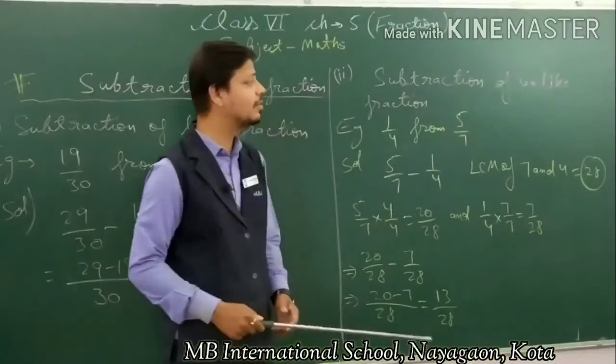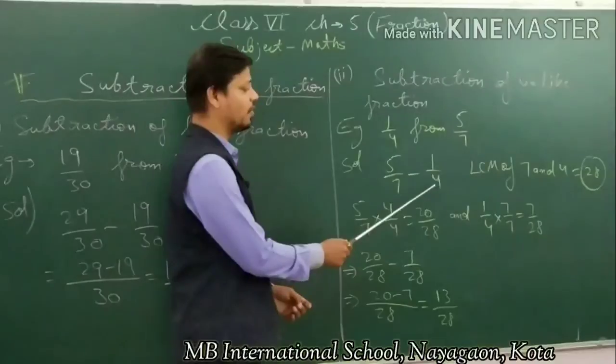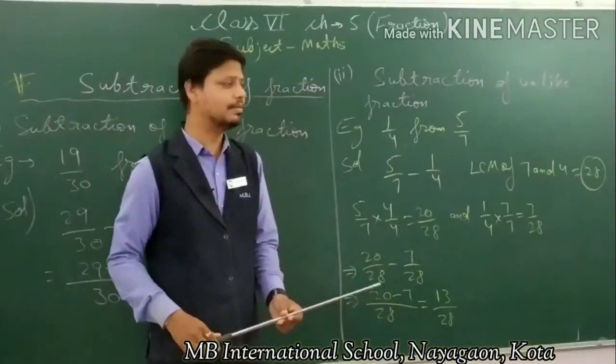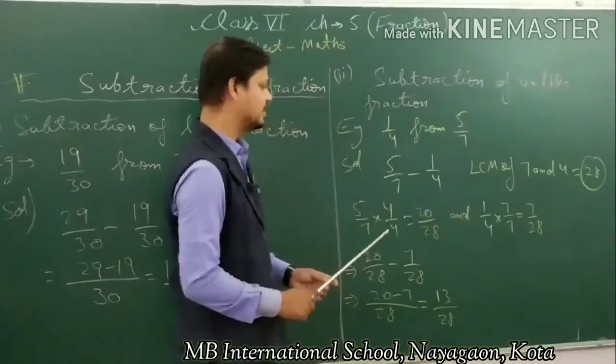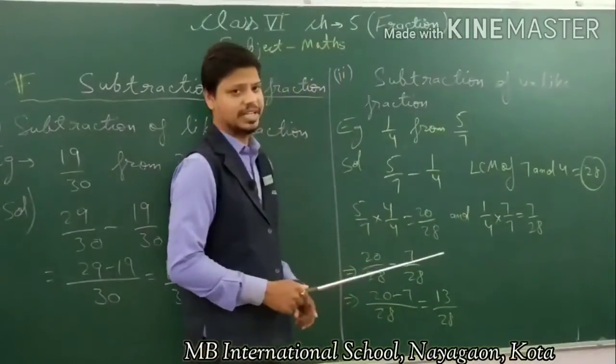Here the denominators are different: 7 and 4. So first you make the denominator the same by taking LCM. LCM of 7 and 4 is 28, so the denominator must be 28.